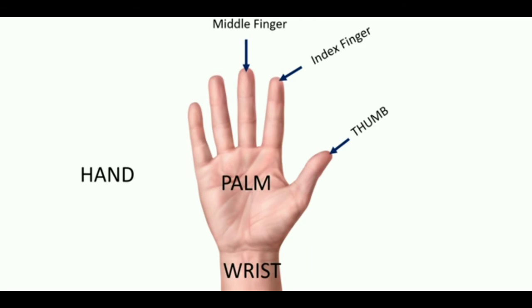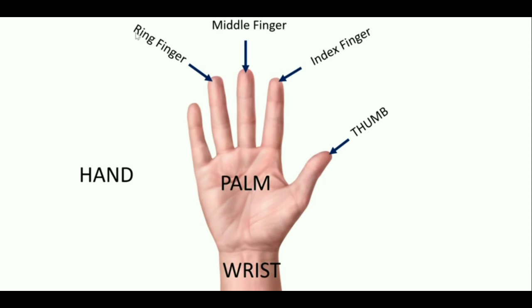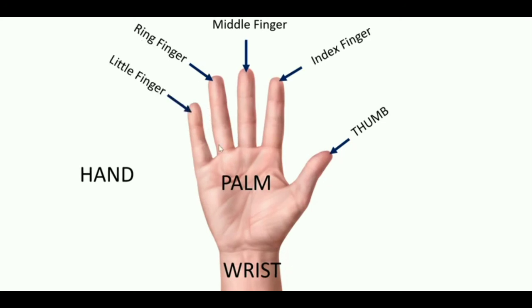The next finger we call the ring finger. And the last one — the smallest finger in our hand — we call it the little finger, or baby finger.